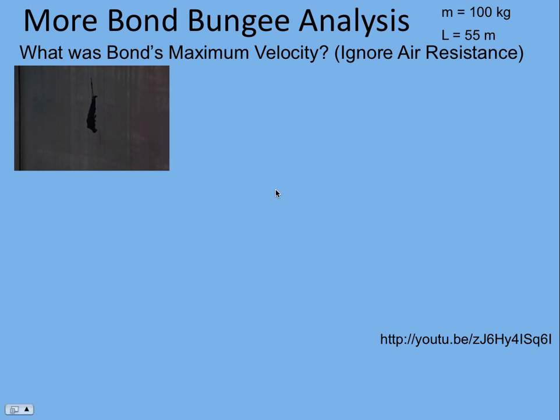Let's look further at this GoldenEye bungee jump. If you haven't seen part one, see Bond Bungee part one. In the second part, we're assuming the mass is still 100 kilograms for Bond and the length of the bungee is 55 meters. We want to figure out what is his maximum velocity, and we are ignoring air resistance.